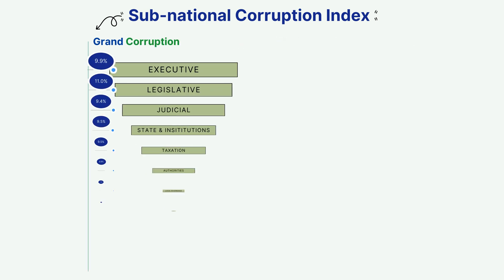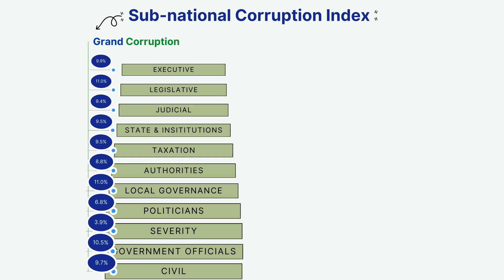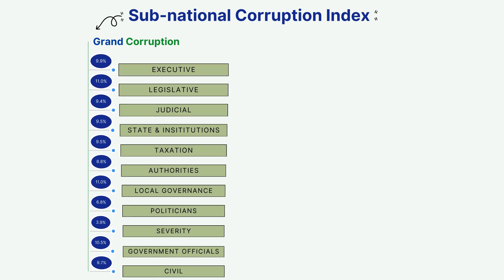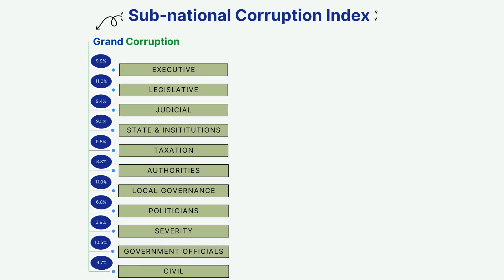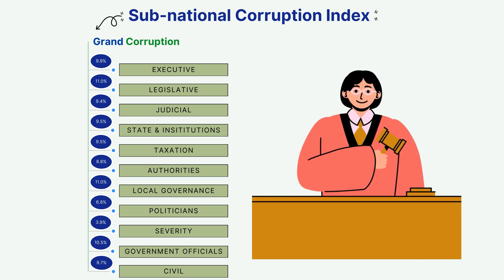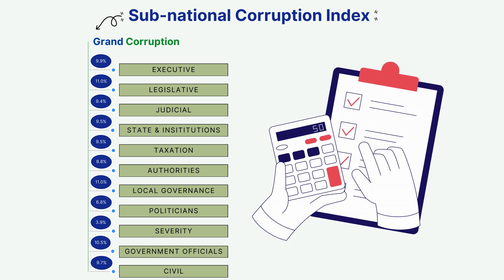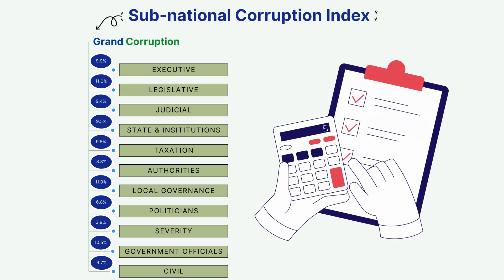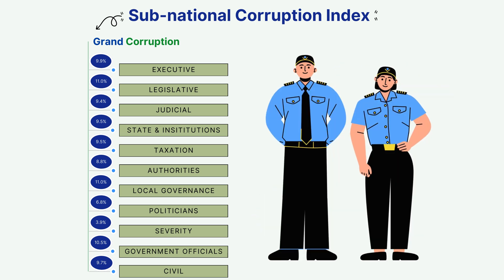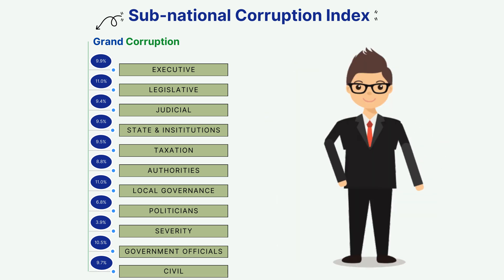Grand corruption, defined as the abuse of high-level power that benefits the few at the expense of the many, is captured by 11 dimensions, including perceived corruption in the judicial branch, in taxation, in the police authorities, or in politicians.